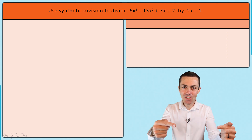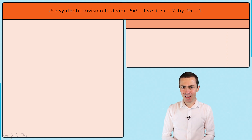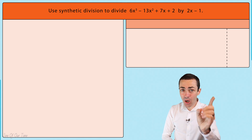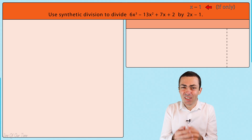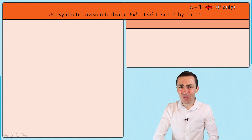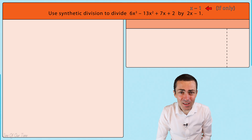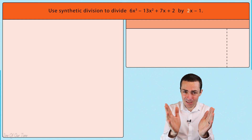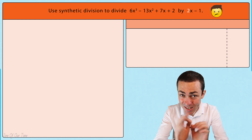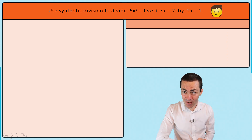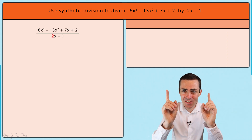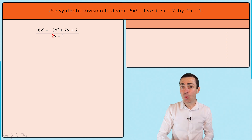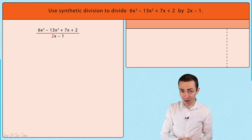This would be a simple synthetic division calculation if the coefficient of x were equal to one. The reality, however, is that the coefficient of x is not equal to one — it is actually equal to two — which makes this problem more complicated. Since synthetic division is designed to work with divisors of the form x plus or minus b, we can manipulate this divisor to take on that form.